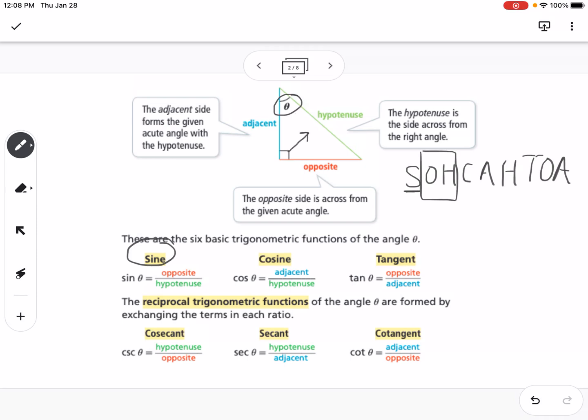Hypotenuse is not going to change. The hypotenuse is always the side directly across from the right angle. Cosine, the C in SOHCAHTOA, is adjacent over hypotenuse. T stands for tangent. Tangent is opposite over adjacent. SOHCAHTOA helps us remember that.